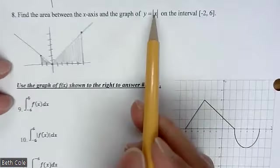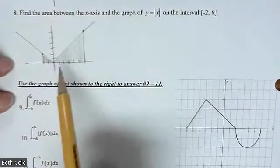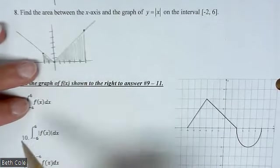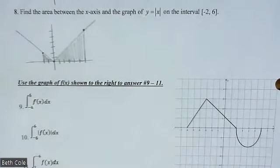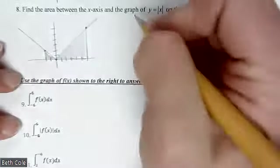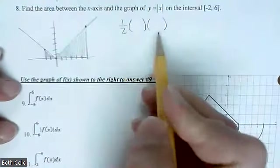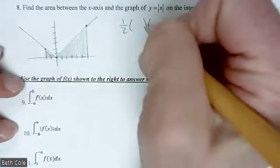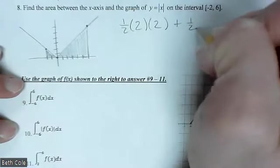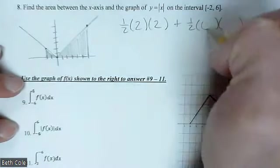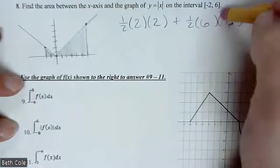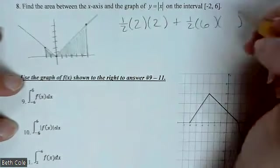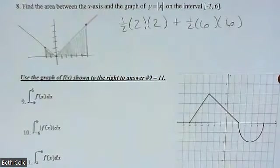Here, absolute value of x. That's your v-shaped graph. We want the area from negative 2 to 6. You ended up with two triangles. How do you do the area of a triangle? 1/2 base times height. For this one, the base and the height are both 2. And then for the other one, the base and the height are both 6. Good so far?